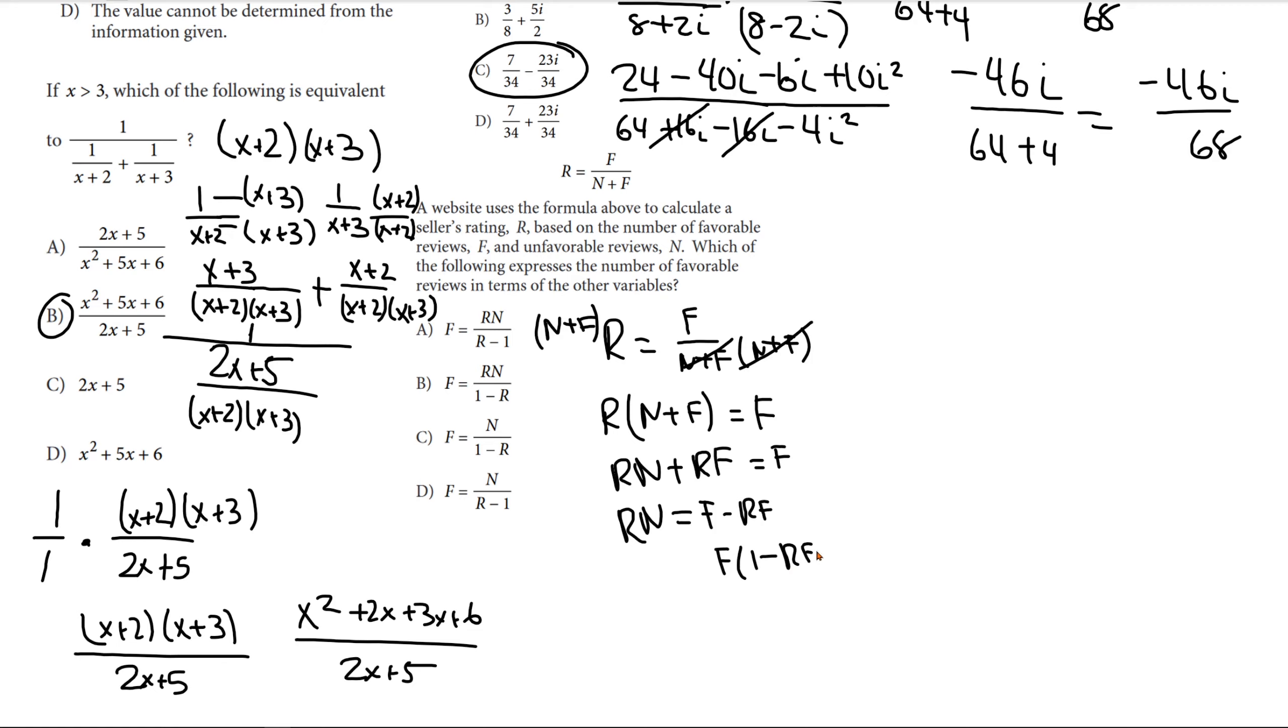So, 1 minus r... because if you distribute this, you get f minus rf. rn on the other side. And now, you just divide this over. 1 minus r, 1 minus r. These cancel out. And you're left with f is equal to rn over 1 minus r. And B is our final answer.